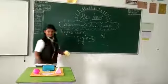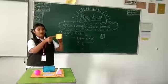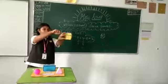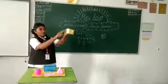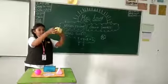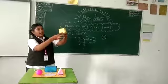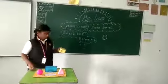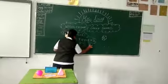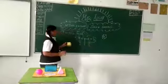Edges. This is called edges. A cube has 1, 2, 3, 4, 5, 6, 7, 8, 9, 10, 11, 12 edges. Cube has 12 edges.